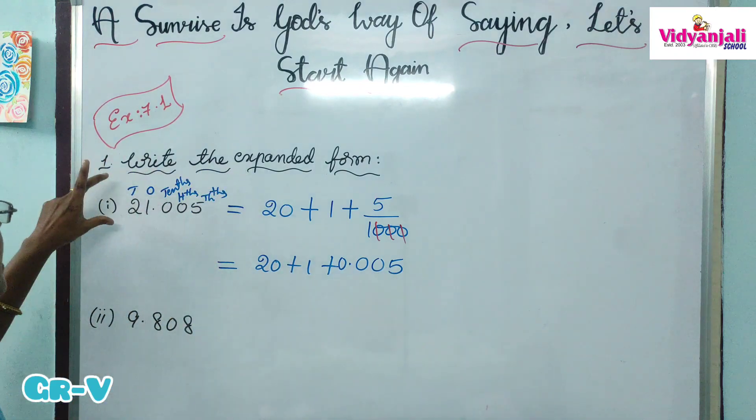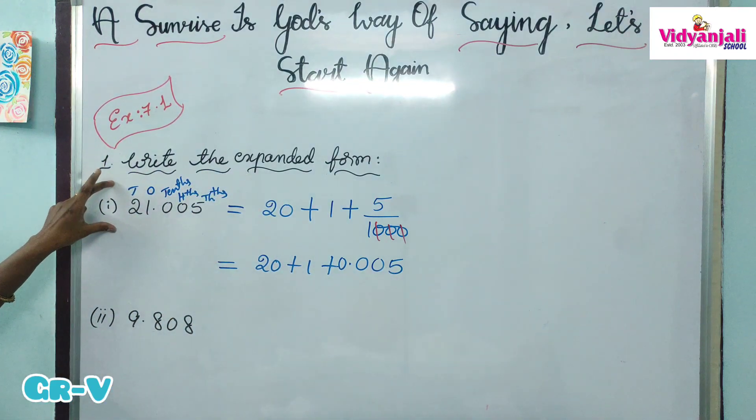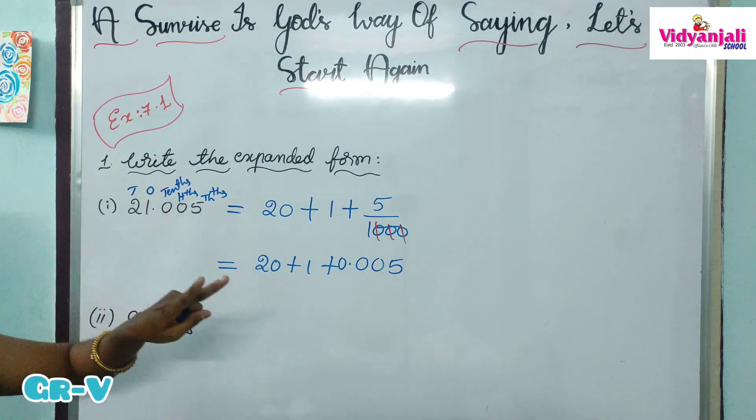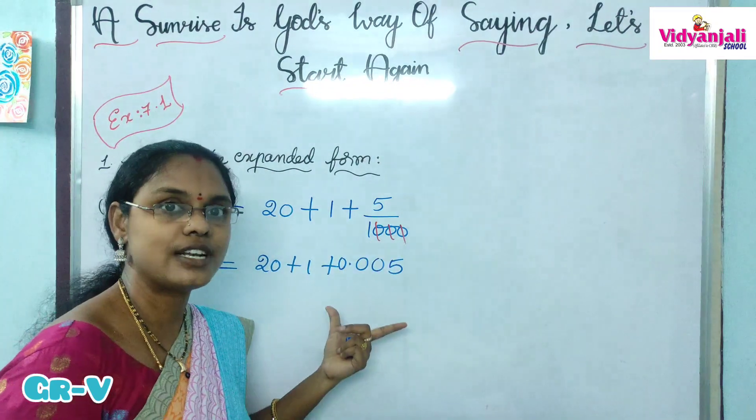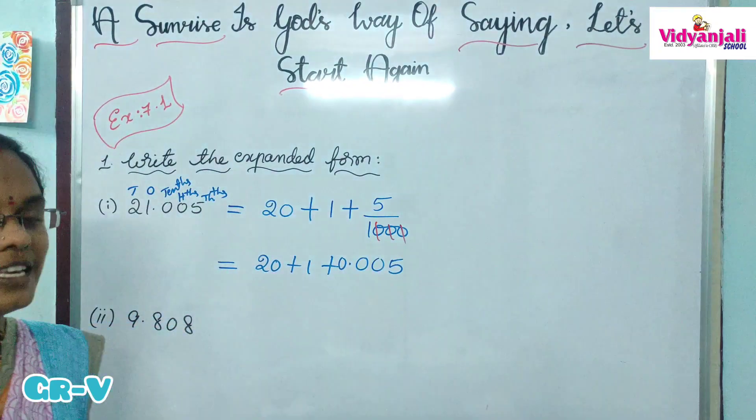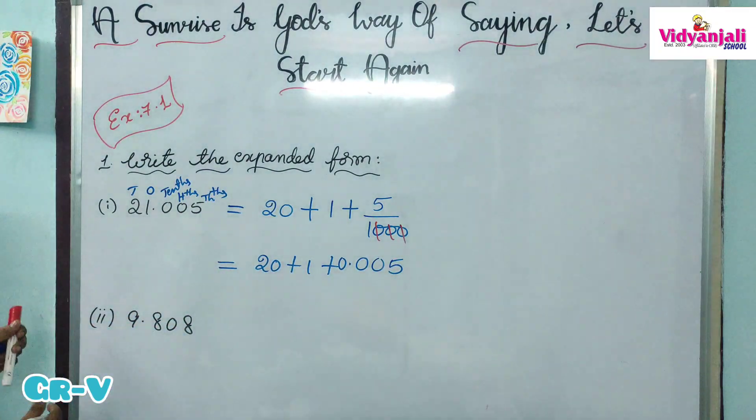So the expanded form can be written in 2 ways: fractional expansion and decimal expansion.